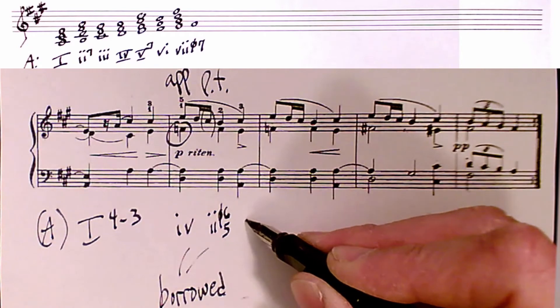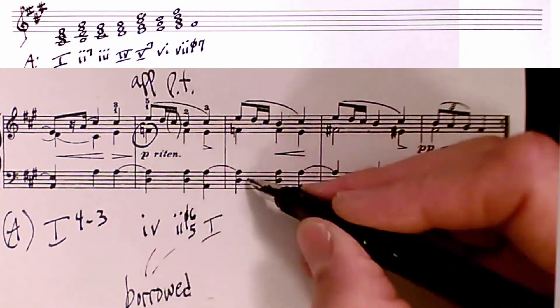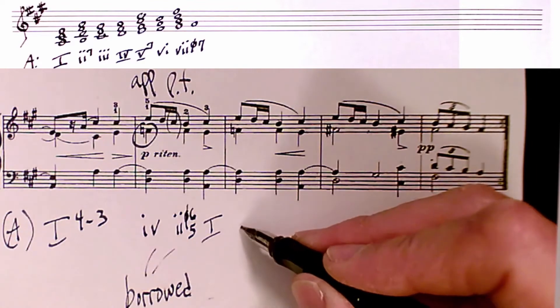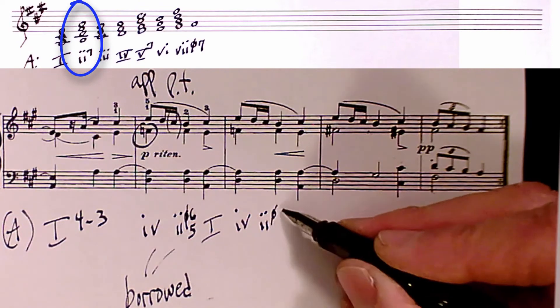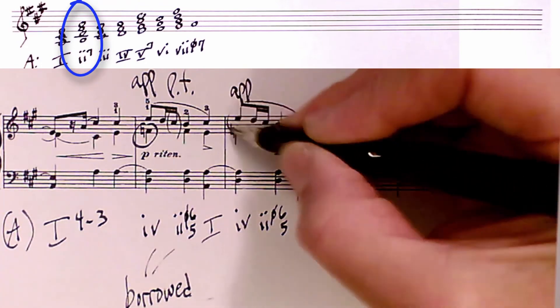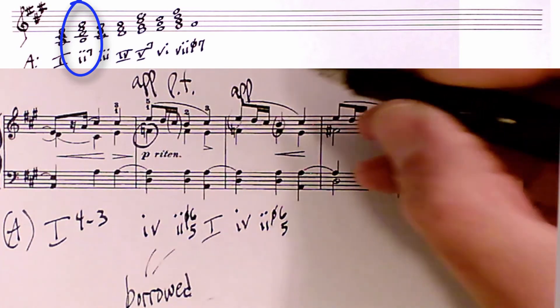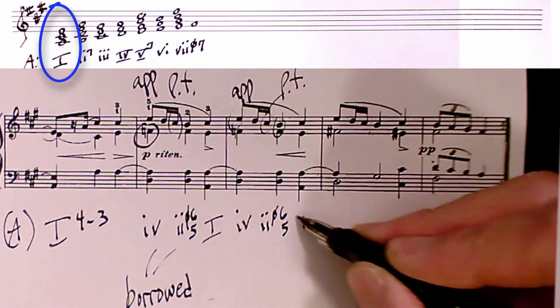Moving back to the one chord. And we repeat that. This measure gets repeated because it sounds so good. It's a four chord. Moving on to the two, half diminished, six, five, with the appoggiatura. And the passing tone here. Back to the one chord.